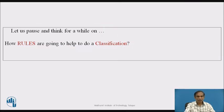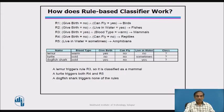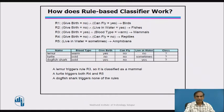Let us consider how rules help us perform classification. From a data set we generate various rules and trigger them to classify objects of interest. For example, rule R3 classifies an object as a mammal. The turtle triggers both rules R4 and R5, while the dogfish shark triggers none of the rules.